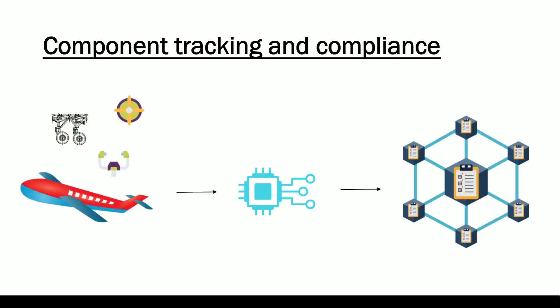Once your data is on top of a blockchain, you cannot change it — it is completely immutable. That is the key property of blockchain. Nobody, no third party, can erase it. With this, we can have proper maintenance records for our airplane and its components. This is what IoT integration with blockchain brings us, and it's what the Excedent project enables.